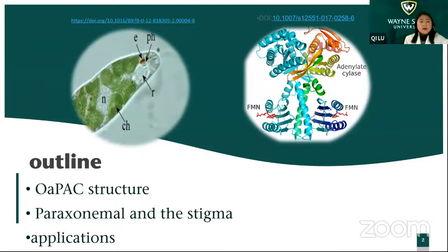The first photoactive adenylyl cyclase was found in Euglena, also in the eye spot. The findings are in the paracosmal position near the stigma. I'm also going to talk about some information on the structure, and I will write some examples mentioned in this chapter.